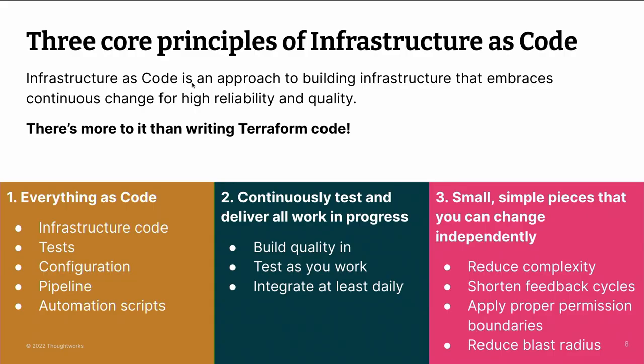The problem is, without proper automation, you don't do infrastructure as code right. You only do the coding part, but not the automation part. That's why it's super important to have a well-defined automated process that's reliable and easy to reproduce. If you read the infrastructure as code book by Keith Morris at O'Reilly — which I think is the standard book on the subject — he says the three core principles are: first, everything should be code: not just the scripts describing your infrastructure, but also the tests, the configuration, the pipeline, and importantly the automation scripts.